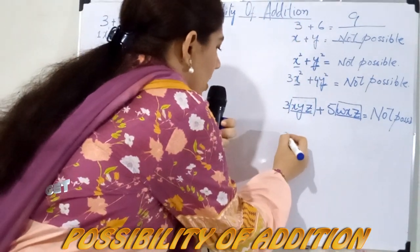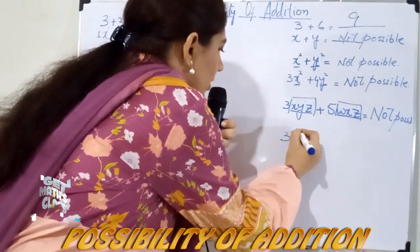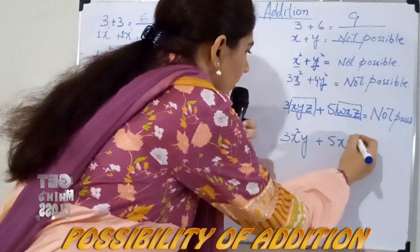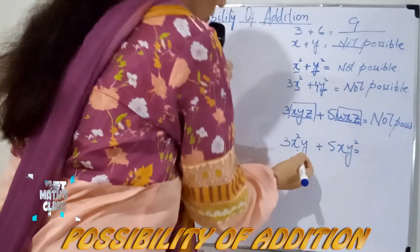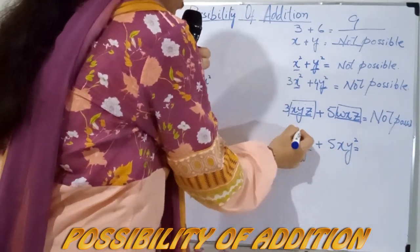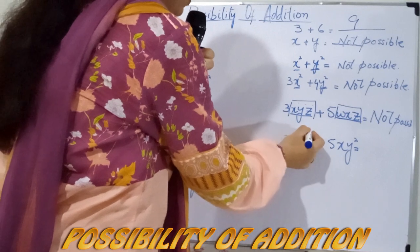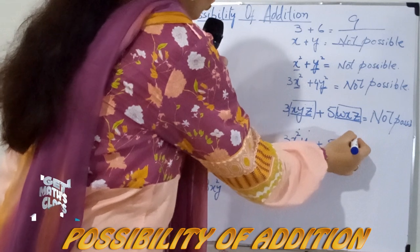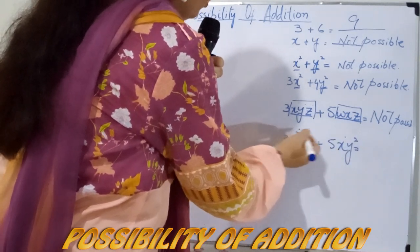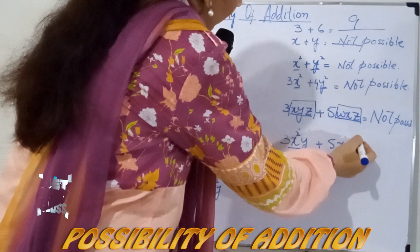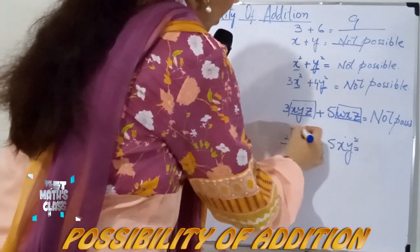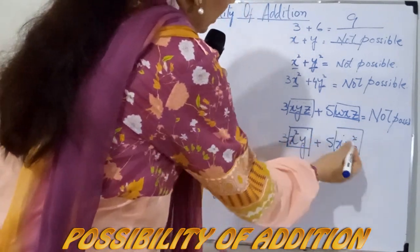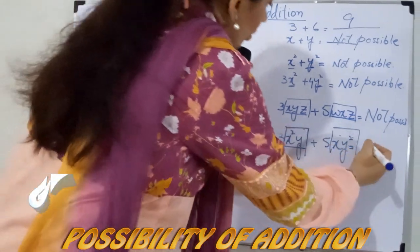Again, the variable part consists of more than one variable with some power. Comparing: x with power 2 and y with power 1 in one term; x with power 1 and y with power 2 in the other. Although the variables are the same, their power distribution is different, so you cannot add them.